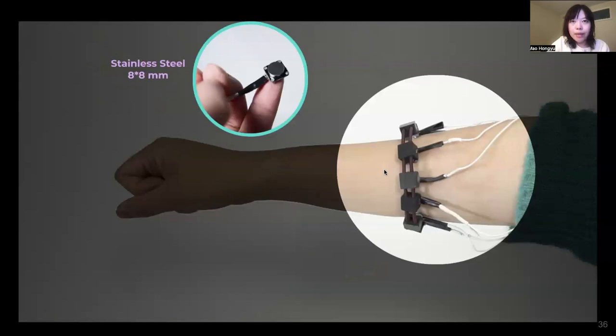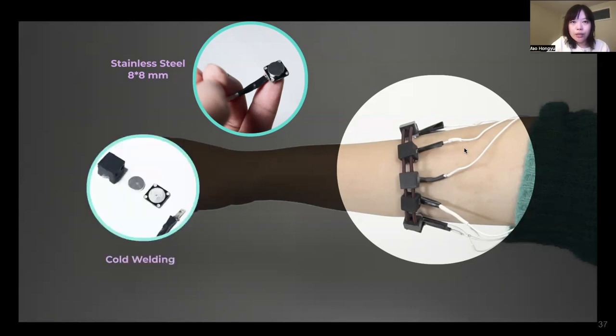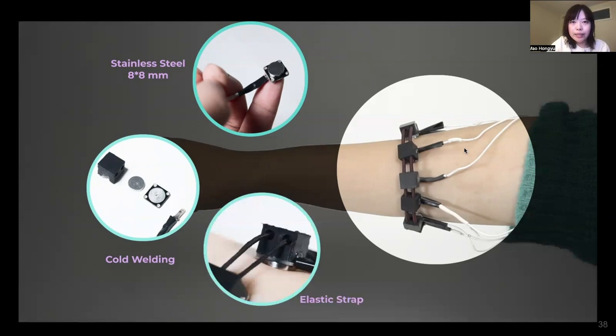For the armband design, our armband is made of only 8 stainless steel electrodes, which have a dimension of 8 by 8 mm and a thickness of 2 mm. To make it durable and relatively compact, it looks like a regular bracelet. The electrodes are interconnected with wires through cold welding technique and designed to interface with our sensing board. We then use an elastic strap to connect all the electrodes to allow flexibility and comfort for different arm sizes. The mechanical design of the armband will ensure good skin-to-electrode connection for people with different arm dimensions.